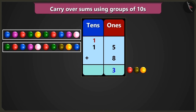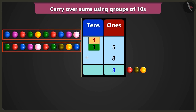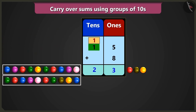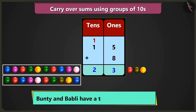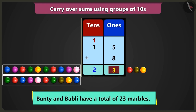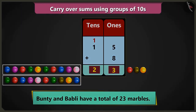So in the box of tens, when we add 1 ten and another 1 ten, we will get 2 tens, that is 20. This means we earlier had 2 tens and 3 ones, that is 23 marbles.